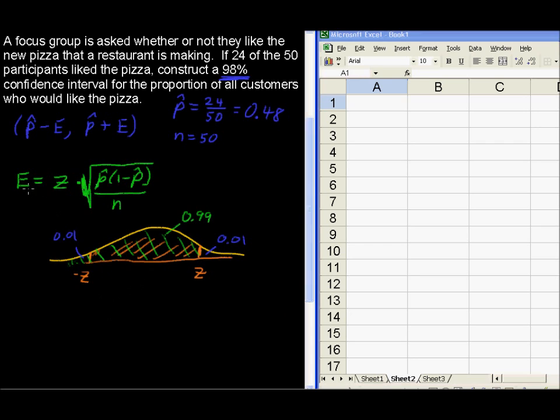So, we are going to use the function normsinv. Now, there is a function norm without the s. Norms means that you're looking for the standardized, the z-score. If you don't use the s, then Excel thinks that you've got a population mean, and a standard deviation, and all this stuff. But we're just looking at the standardized normal distribution. So normsinv.